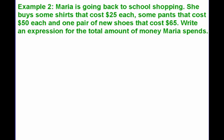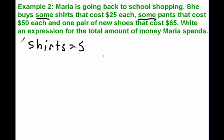Now that you've given it a try, let's take a look. Maria buys some shirts and some pants — that word 'some' tells us we don't know exactly how many shirts or pants she'll buy. We have an unknown amount, so we need variables. For shirts, I'm going to use S. For the number of pants that Maria buys, I'll use P. You can use whatever variables you want — for me, shirts = S, pants = P.